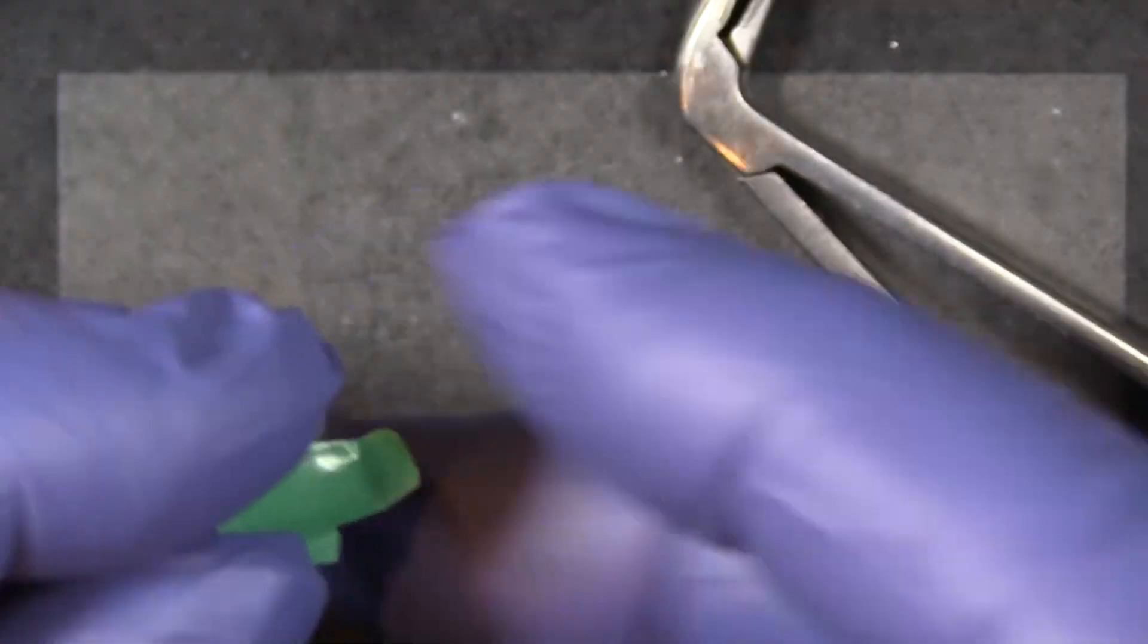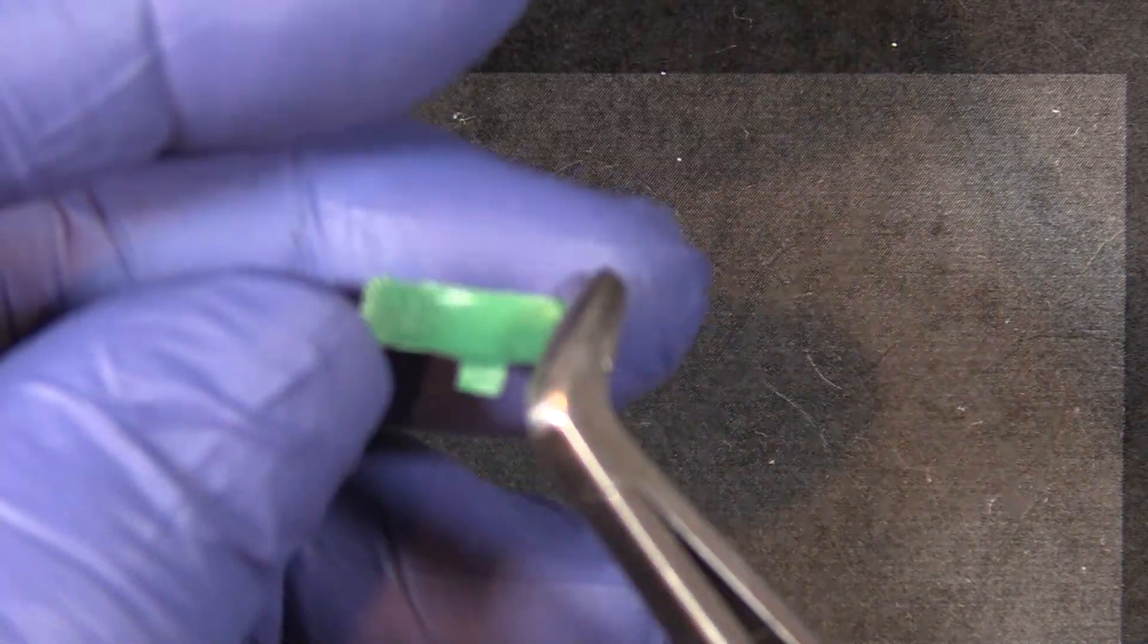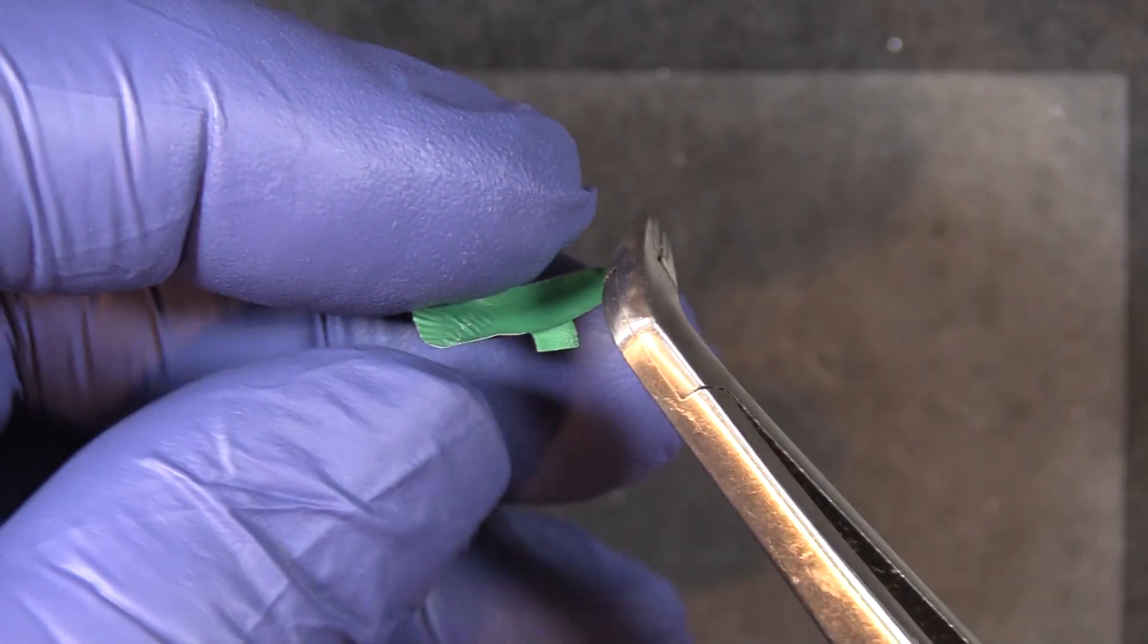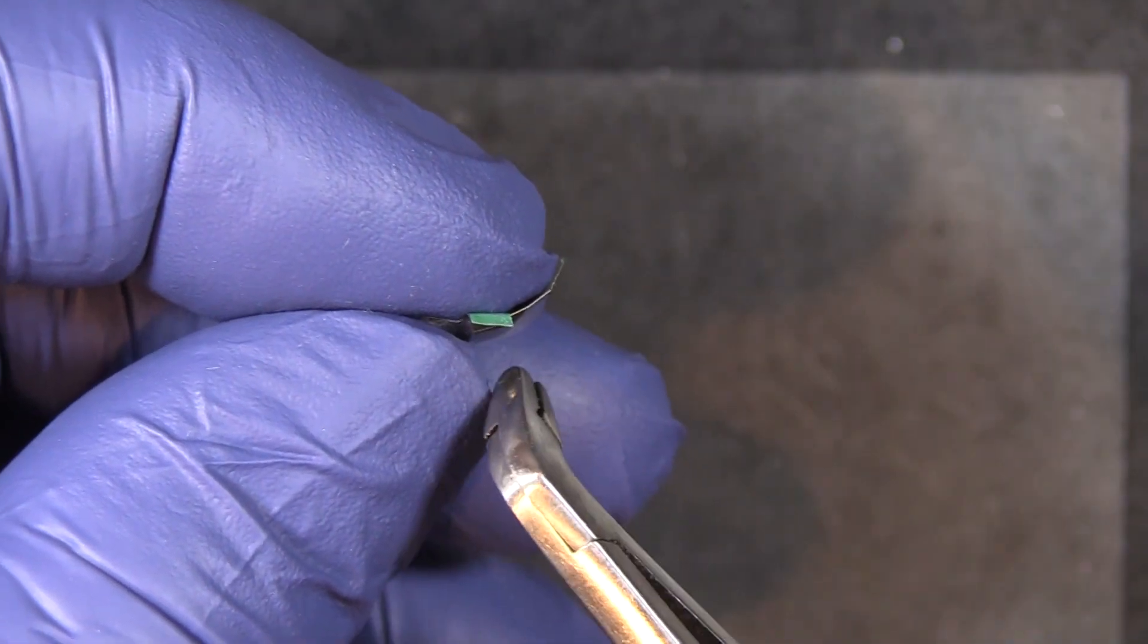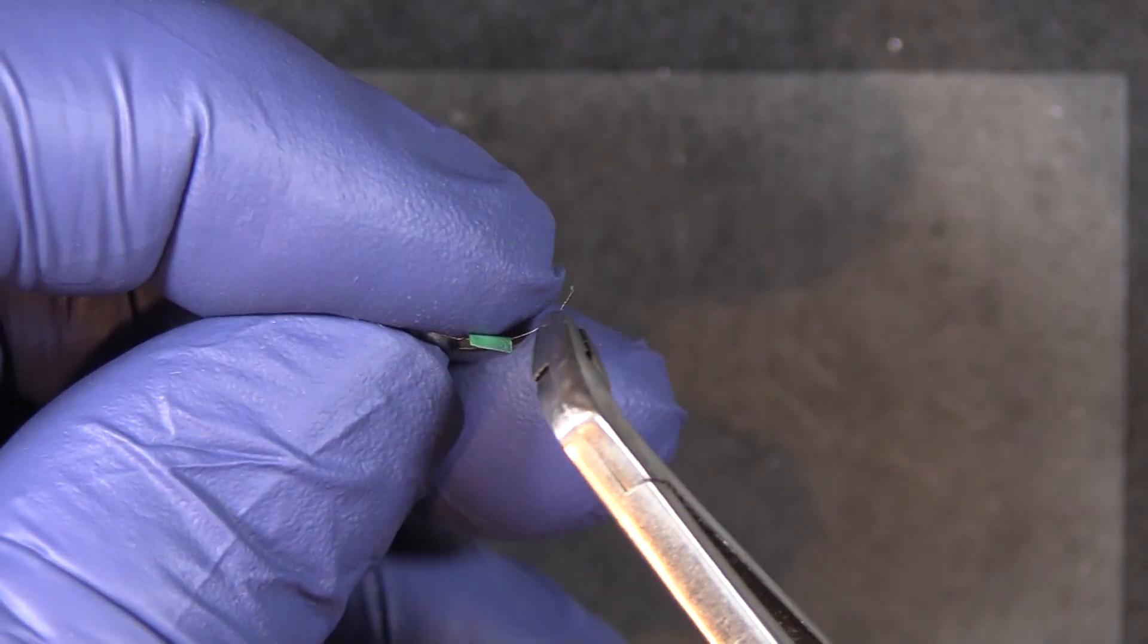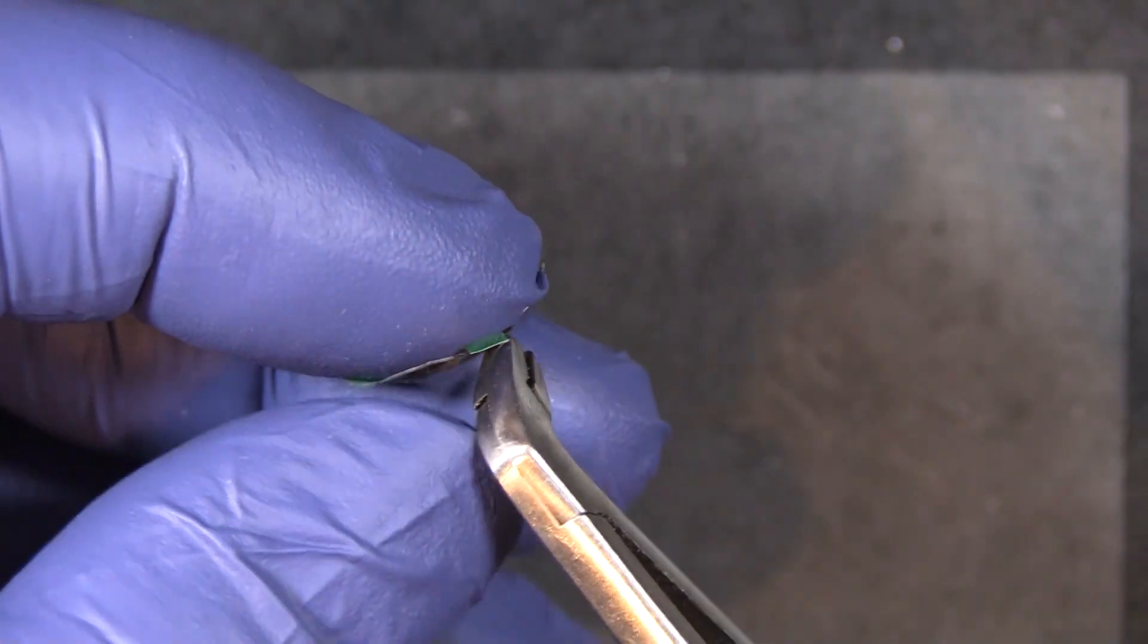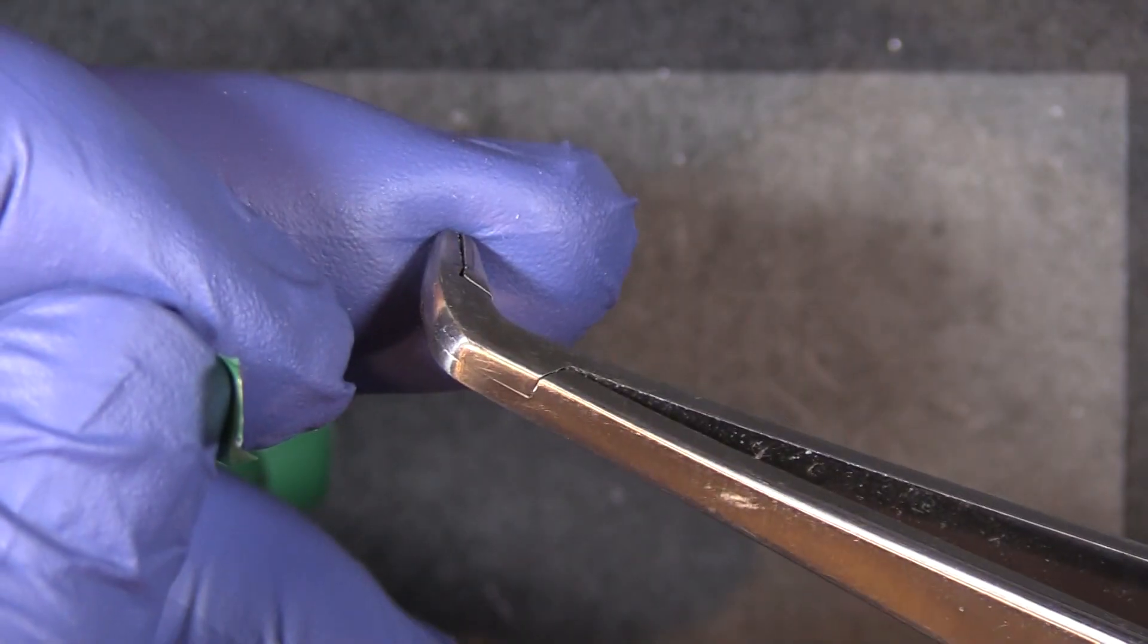You can pull a matrix band out of a hemostat with these things. The last thing you want to do is slip and inadvertently tear part of the matrix band off because if you've got a little sliver left in the interproximal space, it can be very difficult to get that out. So BFA from Garrison Dental Solutions.